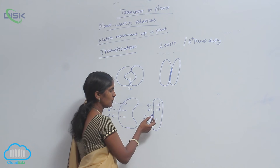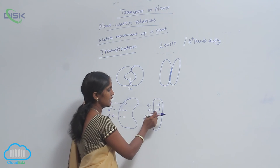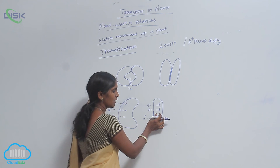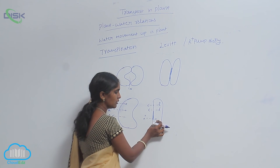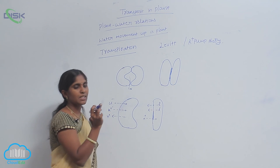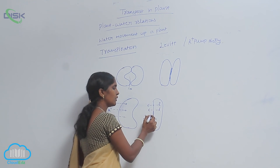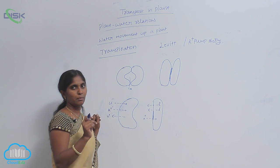The water tends from guard cells to subsidiary cells. Then here, the guard cells lost most of the water and it becomes flaccid. In flaccid status, the pore of the stomata can also remain closed.